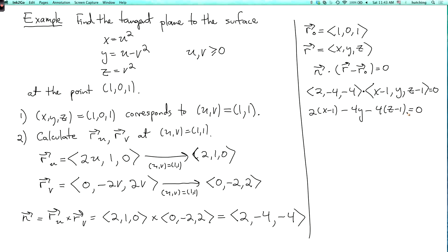Simplifying, we get 2x minus 4y minus 4z equals -2 plus 4, which is minus 2. So that's the equation for the tangent plane.